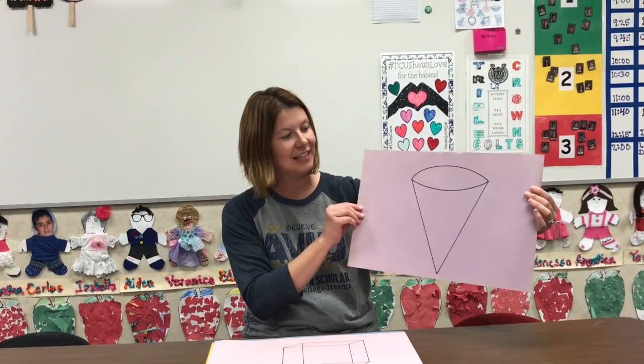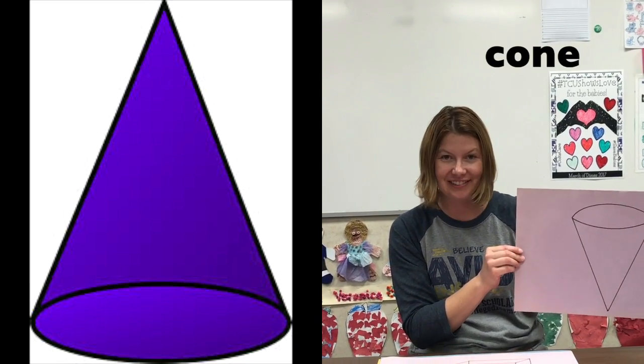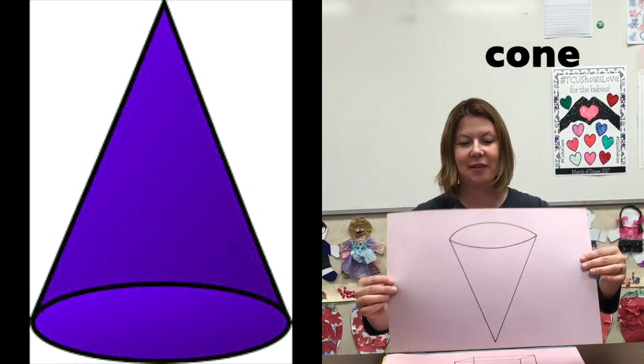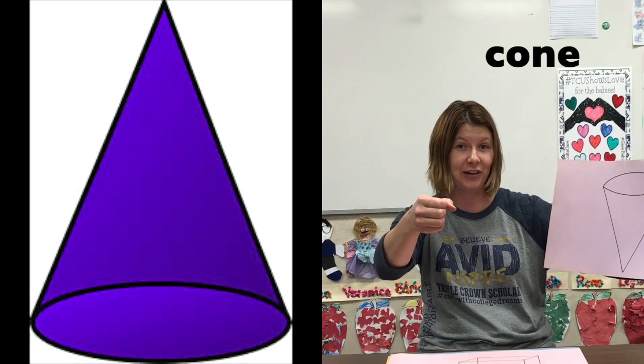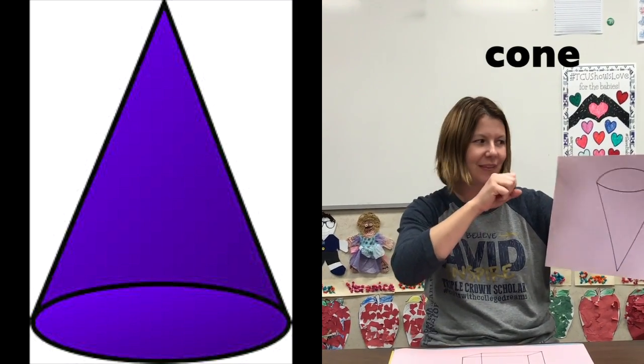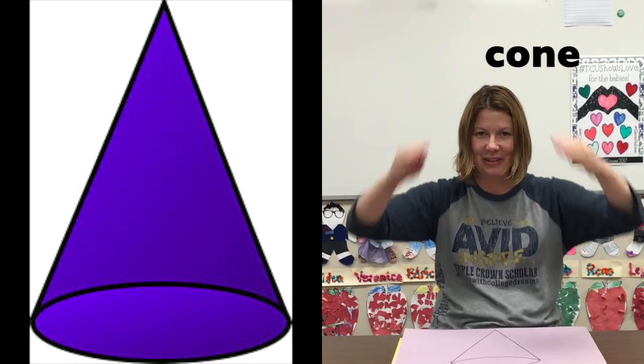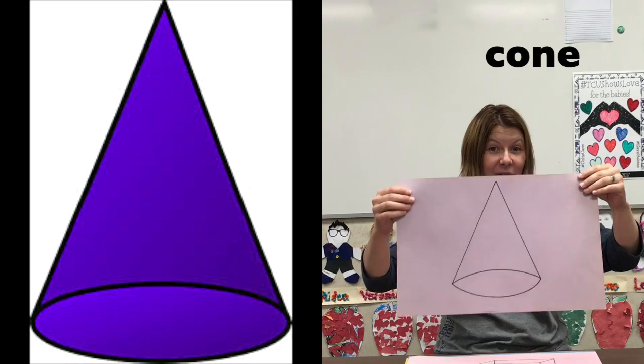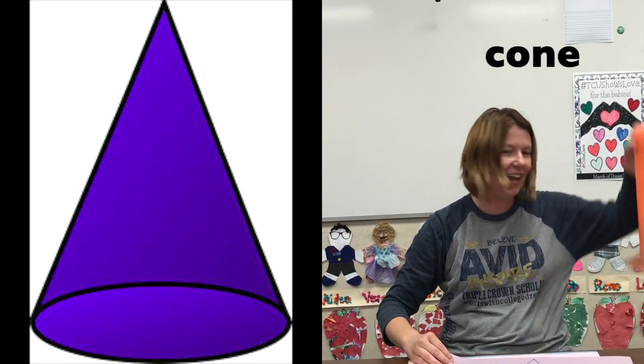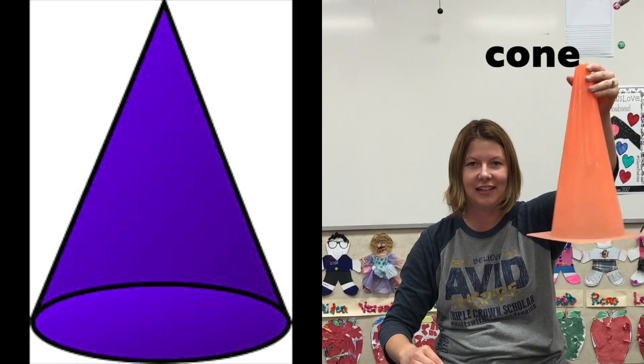Alright friends, our next solid shape is a cone. Let's say cone. A cone can be an ice cream cone. Can you make an ice cream cone with your hand? A cone can be a party hat. Show me with your hands. Party hat. A cone can be a traffic cone. See how it's a solid shape.